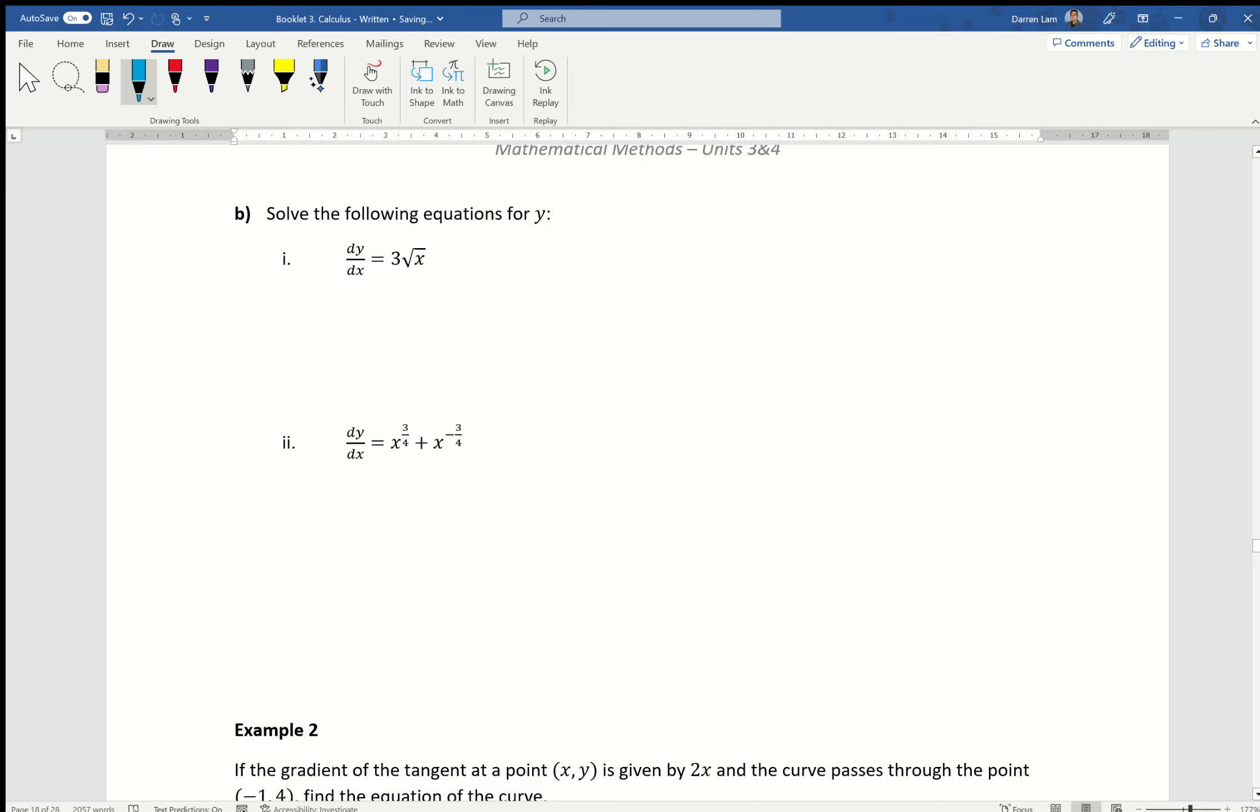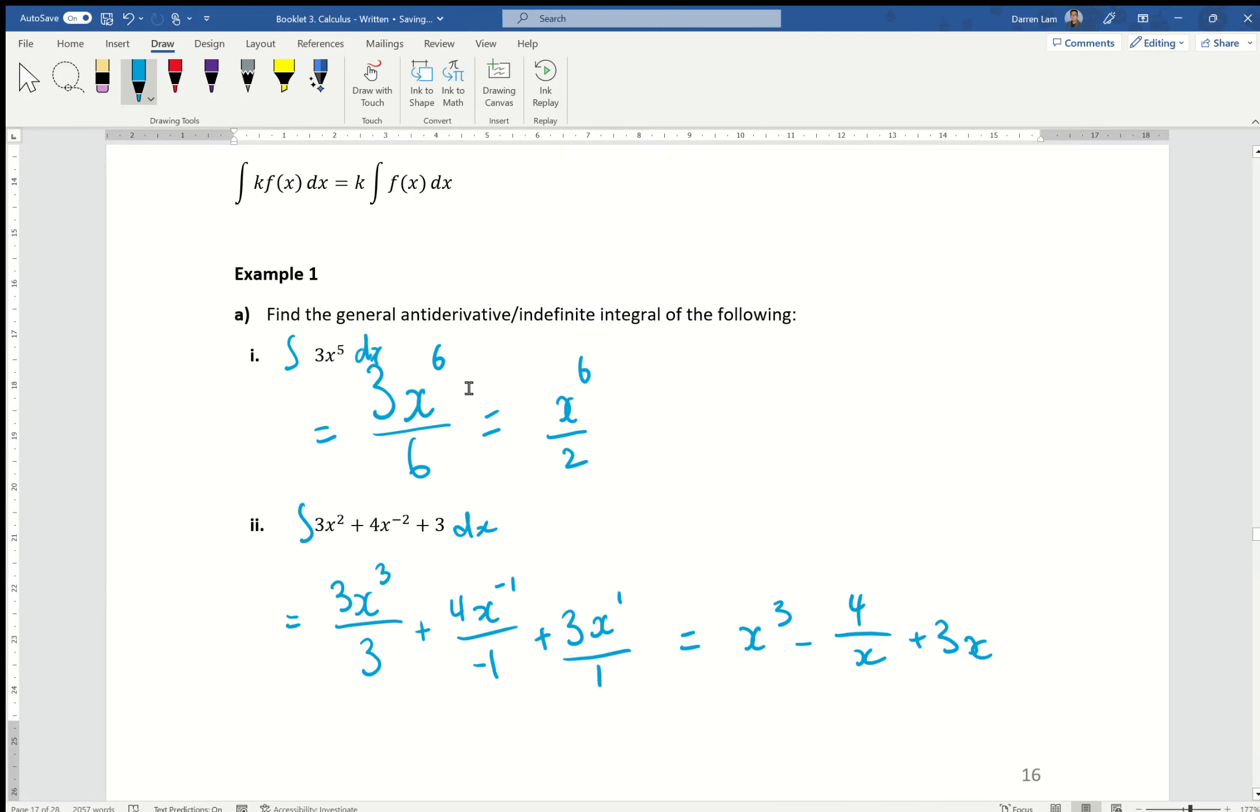If I'm giving dy dx, we can do antidifferentiation to find y, where y would equal to the antidifferentiation of x to the power of 3 quarters plus x to the power of negative 3 quarters dx, which would get 4 times x to the power of 7 over 4 over 7 plus 4x to the power of 1 quarter over 1 plus c. Don't forget your plus c's, which I definitely forgot here. Please include your plus c's as well.